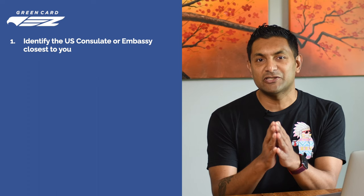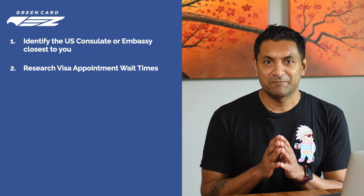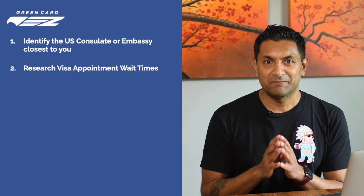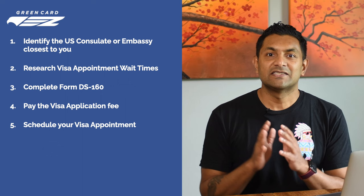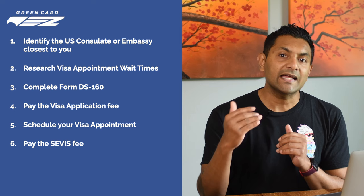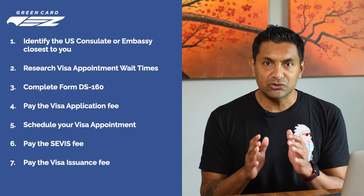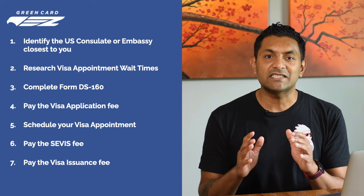Here are the steps you need to complete to schedule and attend your visa interview. Step 1: identify the US consulate or embassy closest to you. Step 2: research appointment wait times. Step 3: complete form DS-160. Step 4: pay the visa application fee. Step 5: schedule your visa interview. Step 6: pay the service fee. For most students, these six steps are enough. However, an extra step applies to students of select nationalities — they need to pay a visa issuance fee after their visa is approved. We will cover all seven steps to be thorough.